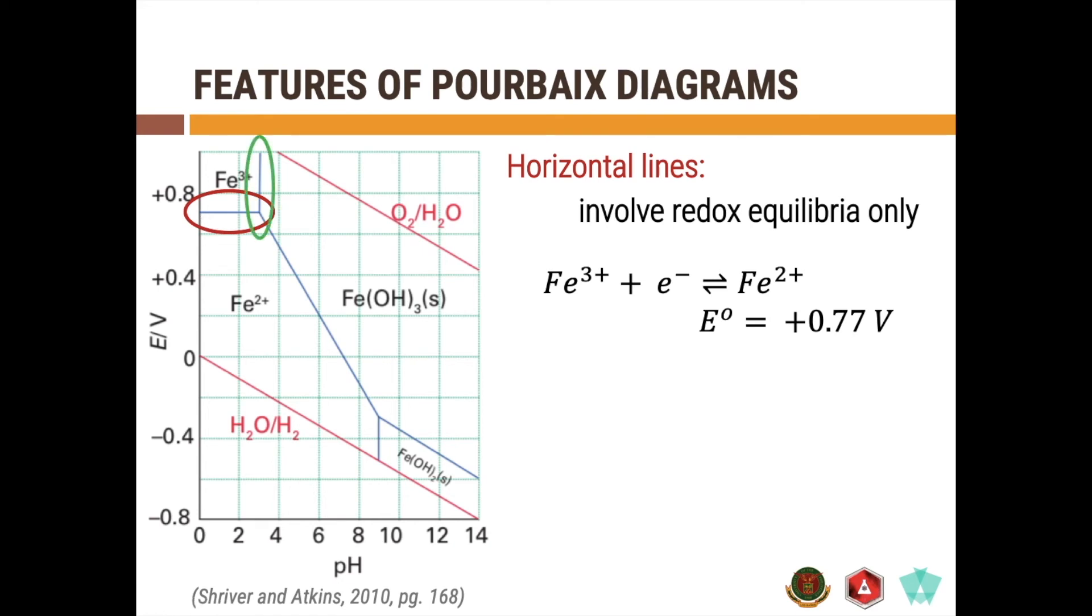If you have a vertical line, that means you have pH-equilibria reaction. In this particular line here, you see that on the right side, you have Fe3+, and on the left side, the compound that you can find is Fe(OH)3, solid. You have the reaction of Fe3+ with OH since there is an increase in the pH forming ferric hydroxide. You can see there is no electrochemical reaction going on here, no changes in the oxidation state. In this case, you have a redox reaction. It is not affected by changes in pH. That is why you have a horizontal line. But what if a certain reaction is affected by both pH and the potential?